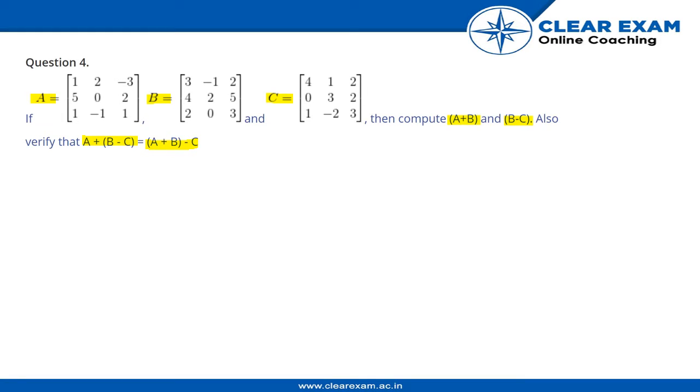The last verification part implies that we cannot directly add A to B. First, we have to subtract C from B and then add the result to A. Similarly, on the right hand side, first we have to add A and B and then subtract C from the result. So let's now move into the solution.